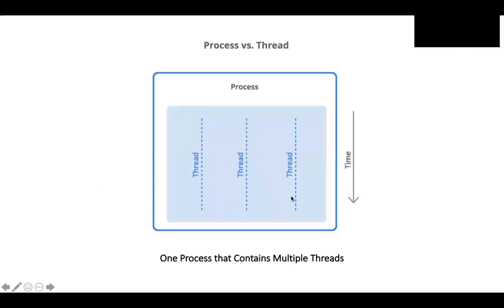Here's a diagram that illustrates the idea of multiple threads running at the same time. This blue box represents the process that's currently running, and within this process, we have three threads running at the same time. This arrow represents the runtime as the process proceeds, and as time goes on, we have three threads that are running.